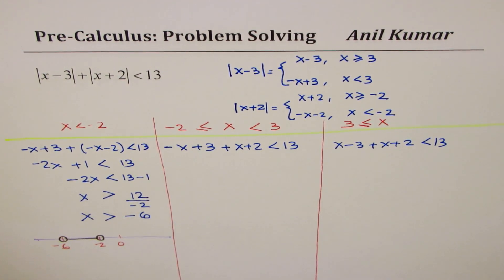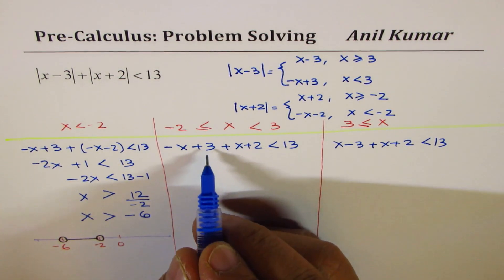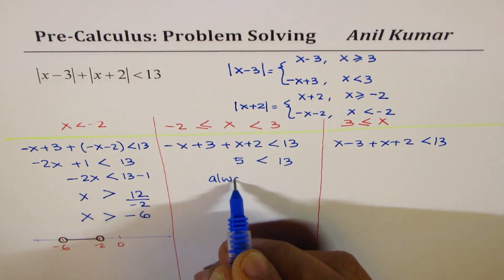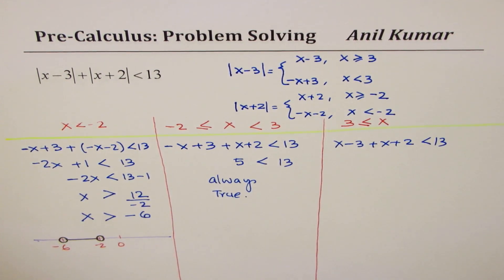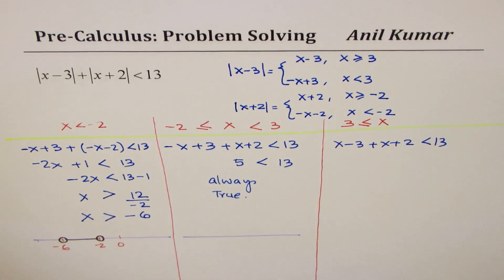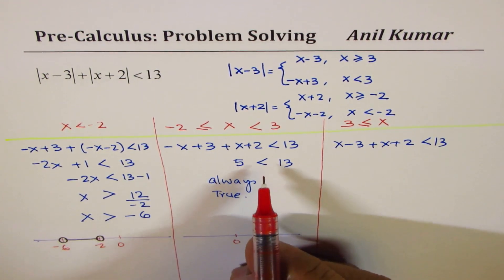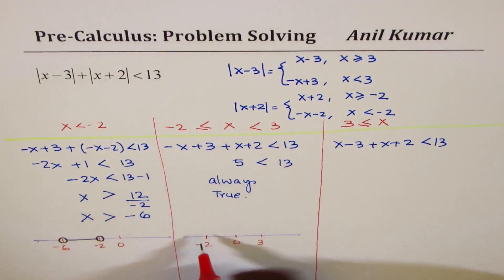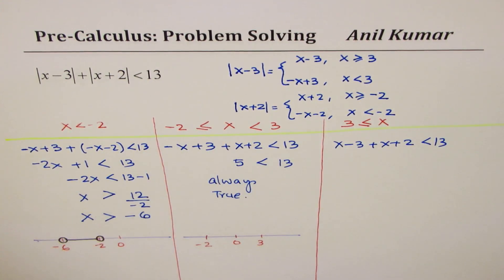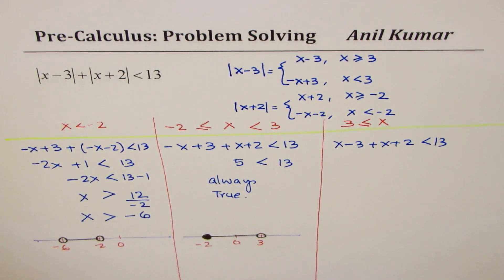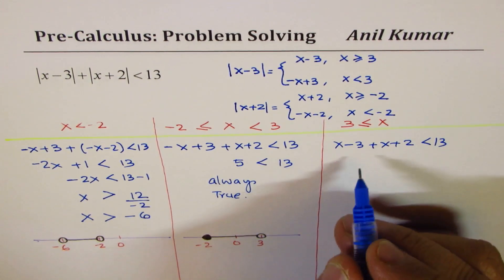For the second interval (−2 ≤ x < 3): −x + x = 0, so we get 3 + 2 = 5, and 5 < 13, which is always true. This means the entire interval from −2 to 3 is part of the solution. So on the number line, the whole interval from −2 (included) to 3 (not included) satisfies the inequality.